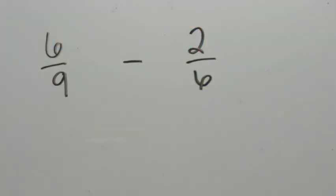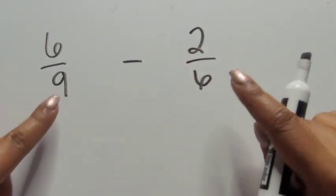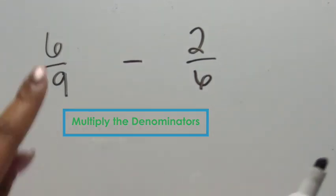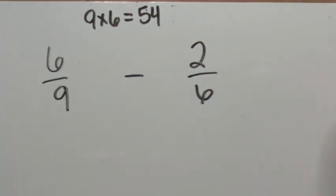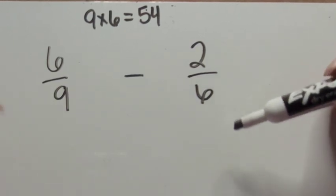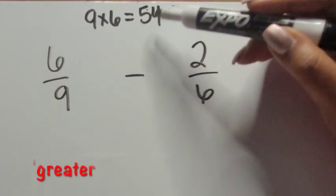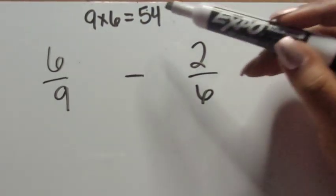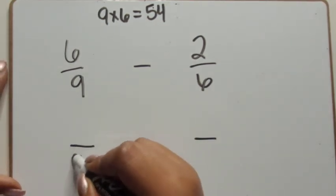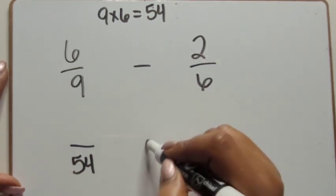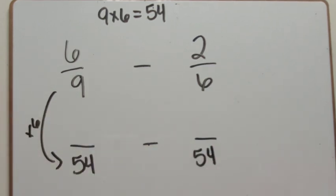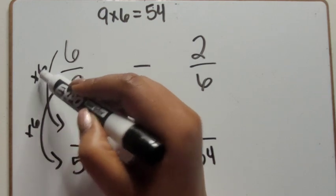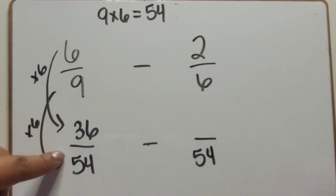For our second example using the second way — multiplying denominators to find a common denominator — we have six-ninths minus two-sixths. Nine times six gives us fifty-four. In our first method we used eighteen and could have used thirty-six; continuing to list multiples would get us to fifty-four. So our new denominator is fifty-four for both fractions. Nine times six equals fifty-four, so we multiply the numerator: six times six equals thirty-six. Six-ninths is equivalent to thirty-six fifty-fourths.